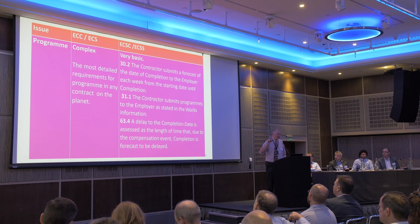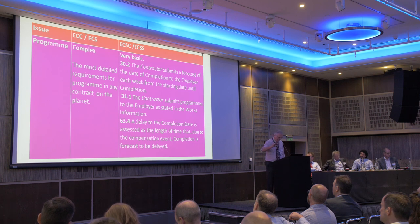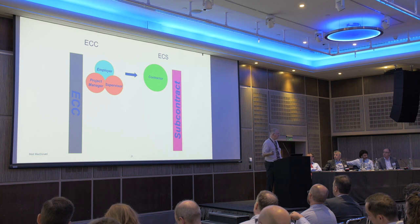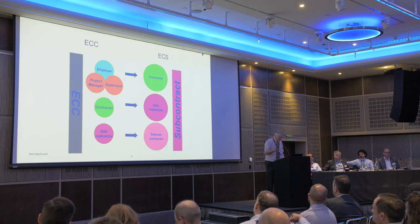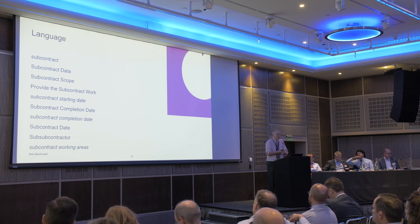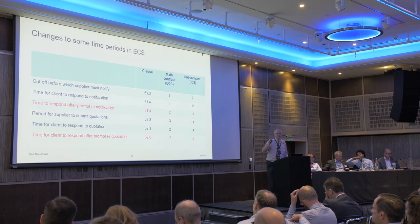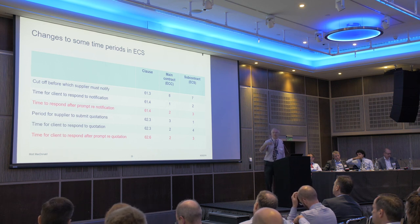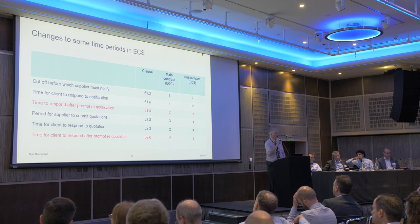Program is a big difference — massively detailed in ECC, very basic in the short contract. The ECS: language changes — employer, project manager, contractor — but you as the main contractor are God, you are project manager, supervisor, and employer for this subcontract. Fundamentally the principles of the ECS are exactly the same as the main ECC. There are changes to time periods only to make it all work together — you get an extra week when getting something from a subbie before passing it along.